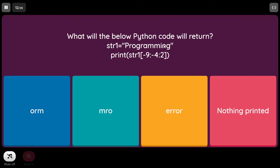What will the below Python code return? str1 equal to 'Programming', print str1[-9:-4:2]. Here start (-9) is less than end (-4) and step is positive, so it prints in forward direction. Index -9 corresponds to 'o', and with step 2 (alternate characters): 'o' is printed, then 'r', then 'm'. So the output is 'orm'.